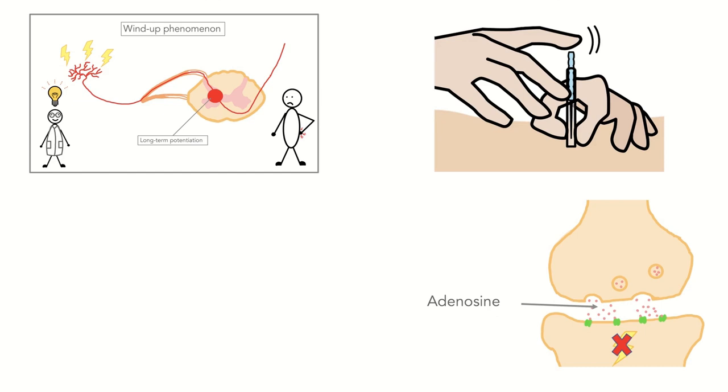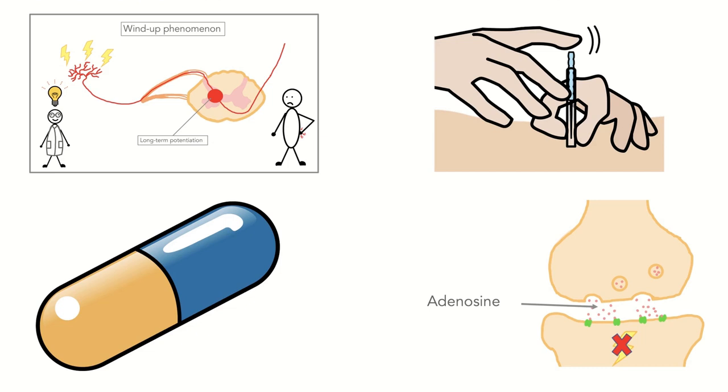And if nothing else helps anymore, opioids are very effective in reducing pain perception by binding to opioid receptors on the nociceptive neurons, preventing the release of glutamate onto other nerve cells, hence preventing the transmission of the pain signal.